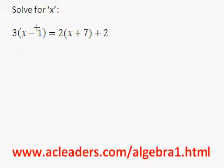Okay, let's solve for x. We have 3 bracket x minus 1 equals 2 times x plus 7 plus 2.